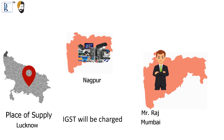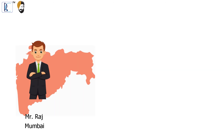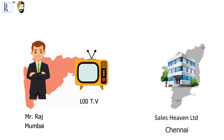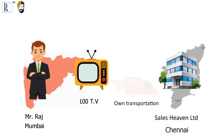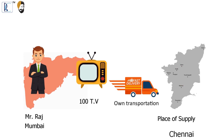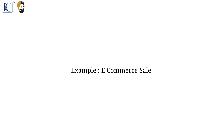Example — when receiver takes the goods from factory: Mr. Raj of Mumbai, Maharashtra gets an order of 100 TV sets from Sales Heaven Limited of Tamil Nadu. Sales Heaven mentions that it will arrange its own transportation and take the TV sets from Mr. Raj's factory. The place of supply will be Tamil Nadu, and IGST will be charged.